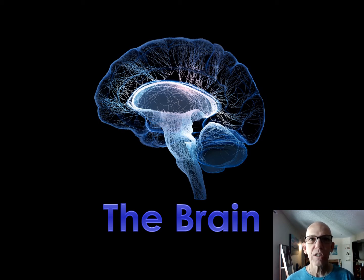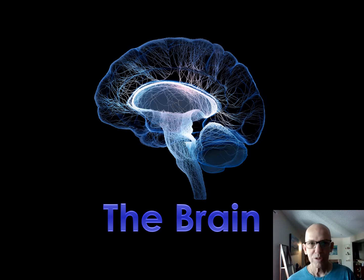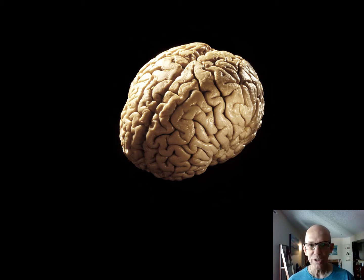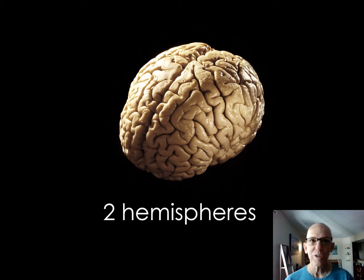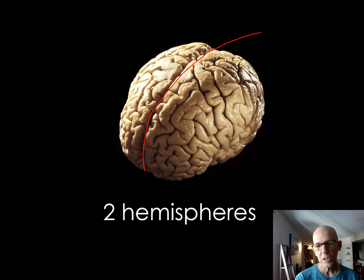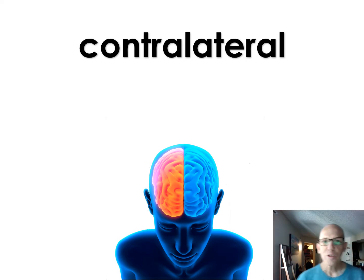This is the second half of physiological psychology. We did the nervous system, and the brain is the most sophisticated part of it, so I broke it into its own section. The first thing to know about your brain is that it's a sphere, and when you cut it in half, a sphere becomes a hemisphere — so there's two halves to your brain: the left half and the right half.